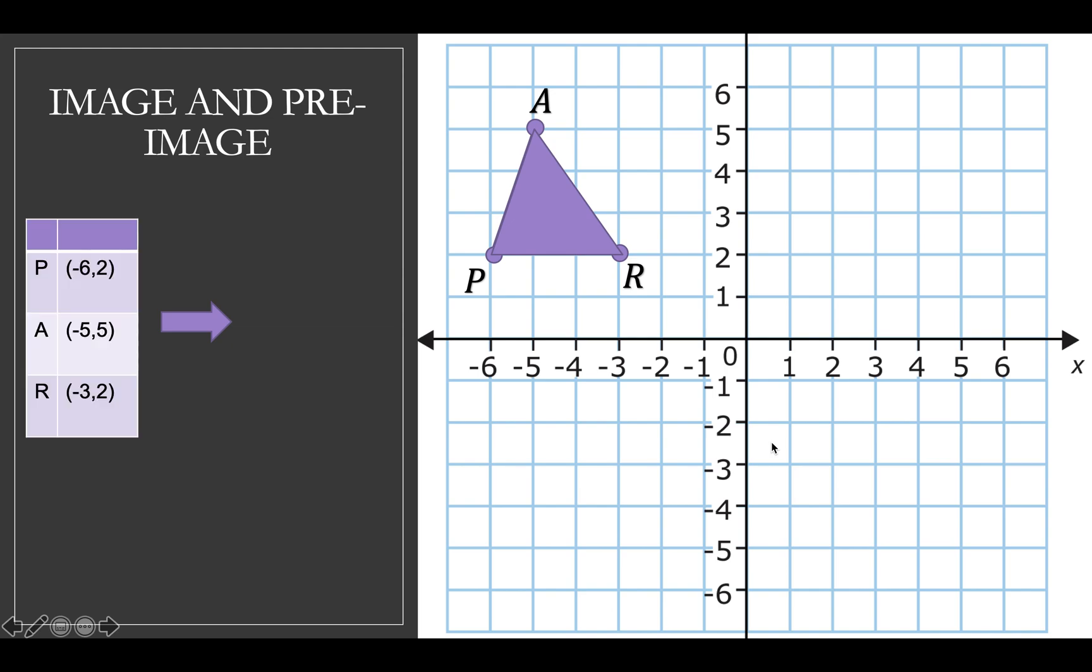So where is it now? Well, right now, P is at negative 6, positive 2 for the coordinate. We got A at negative 5, positive 5, and negative 3, 2 is where R is. So that's the current location of my vertices, and I'm going to move it over here and see what happens. So I take this, I move it like this, and now it's in the middle of the room, kind of, and now it's got some new points.